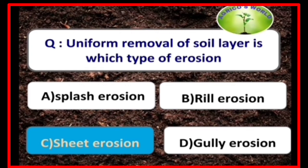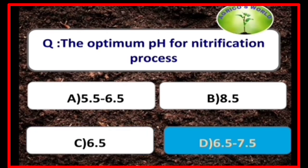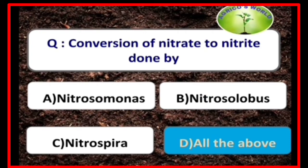Uniform removal of soil layer is sheet erosion. The stages of erosion are splash, sheet, rill, gully, and ravine. The optimum pH for the nitrification process is 6.5 to 7.5, and the optimum temperature is 28 to 35 degrees Celsius.